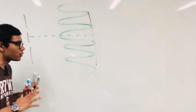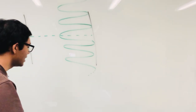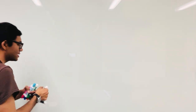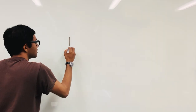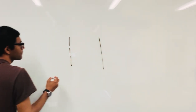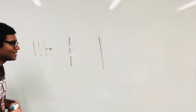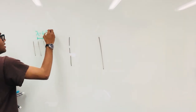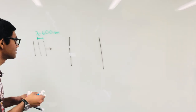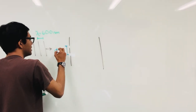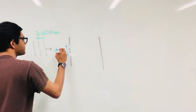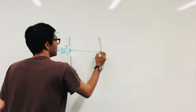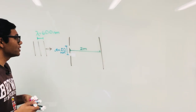Now we'd like to calculate some properties of the double slit experiment. Let's make a cleaner diagram. The wavelength of the beam of light is 600 nanometers. The distance between the two slits, d, is 0.02 millimeters. And the distance from the double slit to the detector is 2 meters.